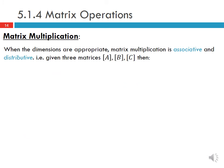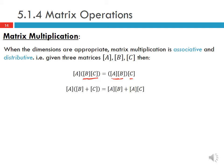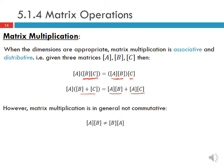When dimensions are appropriate, matrix multiplication is associative — A times B times C gives the same result regardless of whether you compute B times C first or A times B first. It is also distributive: A times (B plus C) equals A times B plus A times C. However, matrix multiplication is in general not commutative — A times B is not equal to B times A, so the order of matrices matters.